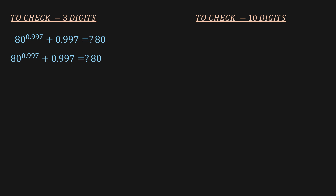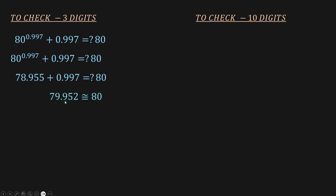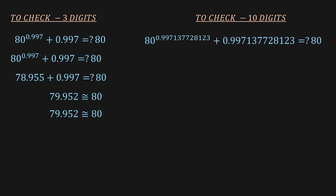Raising 80 to the power of our approximation and adding x gives us approximately 79.952, which is approximately equal to 80. So the three-digit approximation checks out.